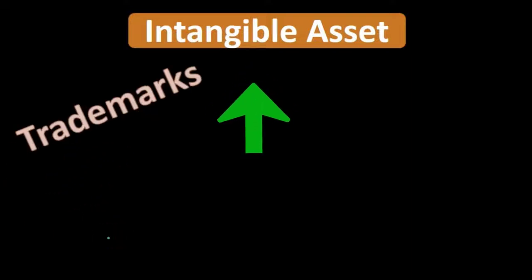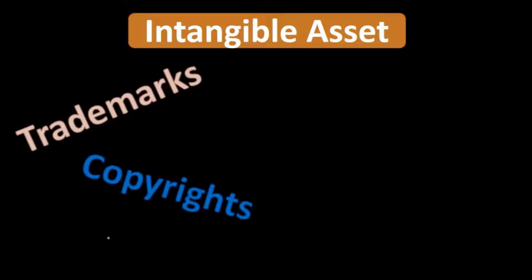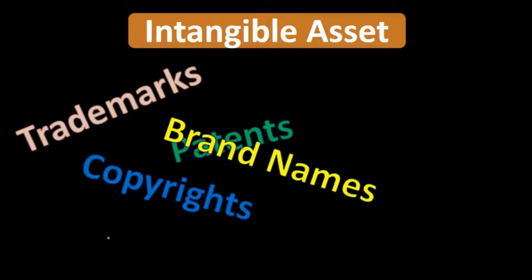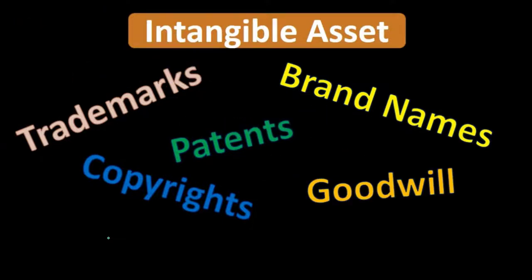These are things like trademarks, copyrights, patents. We could have brand names that have some intangible asset to them, as well as goodwill.